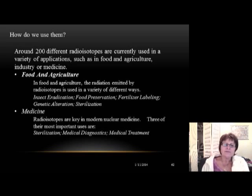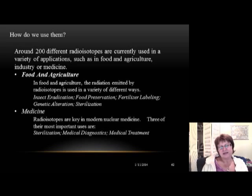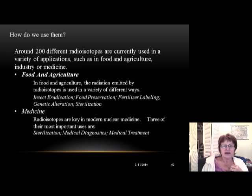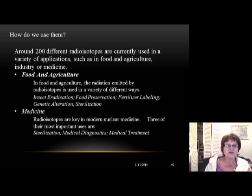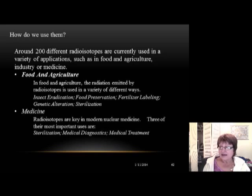In food and agriculture, radiation is mainly used for food preservation — it's a better way than adding chemicals because the radiation is gone afterward. Radiation is also used for insect eradication: radiation makes insects unable to reproduce, so they die out. Other uses include fertilizer labeling — measuring how long fertilizer stays in soil — as well as genetic alteration of plants and sterilization.